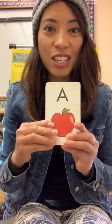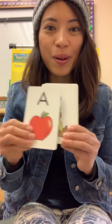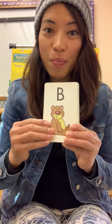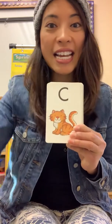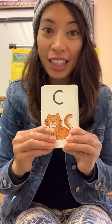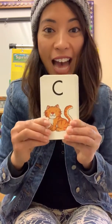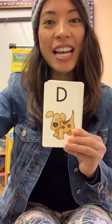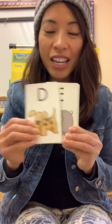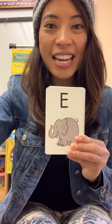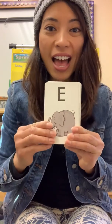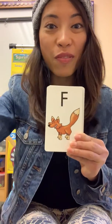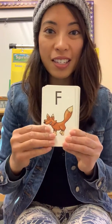A is for apple. B is for bear. C is for cat. Look at his orange hair. D is for dog. And E is for elephant. And F is for fox.